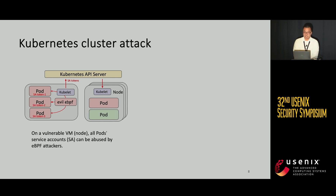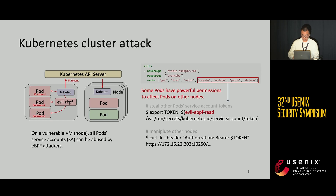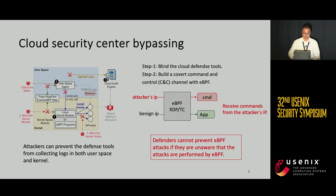In a Kubernetes environment, eBPF attackers can abuse overprivileged service accounts of Kubernetes pods to distribute eBPF malware and perform Kubernetes cross-node attacks, which enables them to steal service accounts of other pods. When there are high-permission pods that can modify other pods, attackers can steal these service account tokens and abuse the permissions of other pods. Using eBPF, attackers can prevent defense tools from collecting logs in both user and kernel space and avoid detection. Moreover, they can build a covert command-and-control channel by intercepting control packets from the network layer.